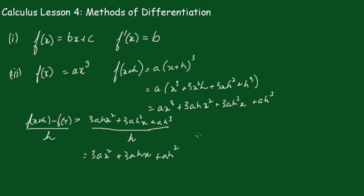So f dash x is equal to the limit as h goes towards 0 of 3ax squared plus 3ahx plus ah squared. This will be 0, this will be 0, and you get the result 3ax squared.